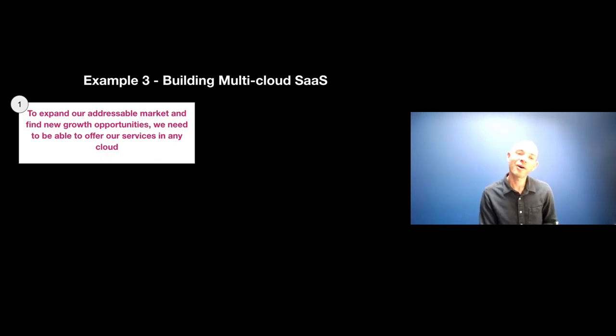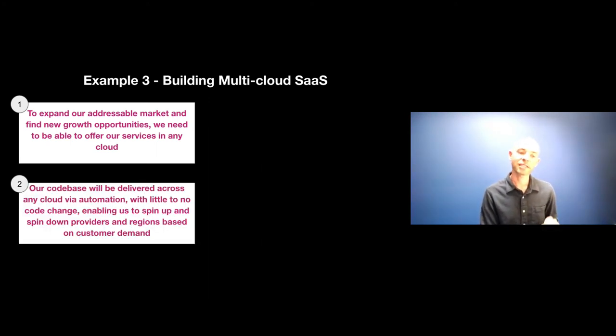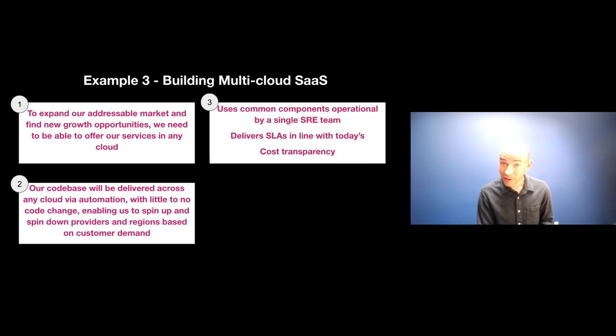And finally, building multi-cloud SaaS. This one is for more of those mature companies, I see this predominantly. These are all examples that I've even worked with customers on or seen or discussed with other customers or worked with within the company. So building multi-cloud SaaS, why would someone want to do that? Well, maybe we need to expand our addressable market and find new growth opportunities. We need to be able to offer our services in any cloud. So what would the outcome that you deliver from a technical standpoint? Well, the outcome would be that if we could ship our code base across any cloud via automation, which lends to speed with little to no code change, it would enable us to spin up and spin down providers and regions based on customer demand. Not to mention, it may actually help with cloud partnerships if that's an area that you're investing.